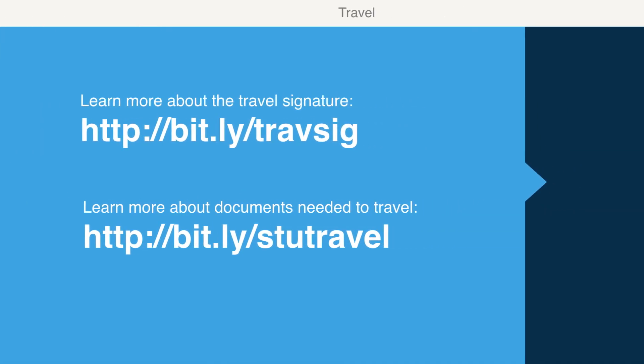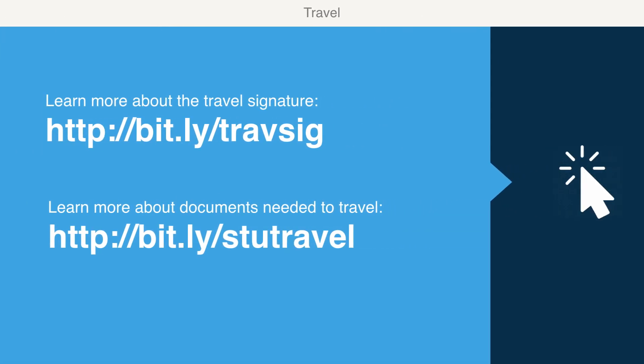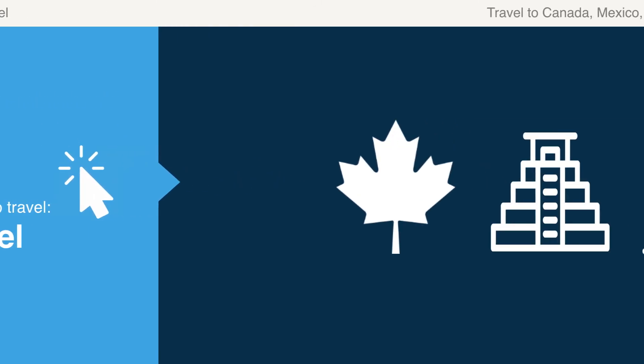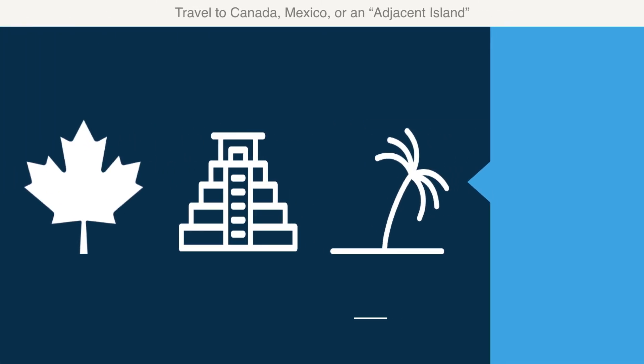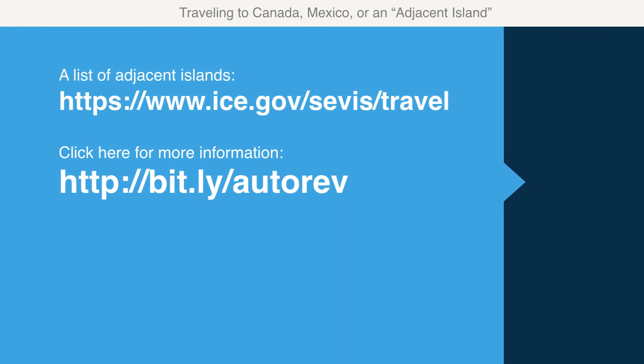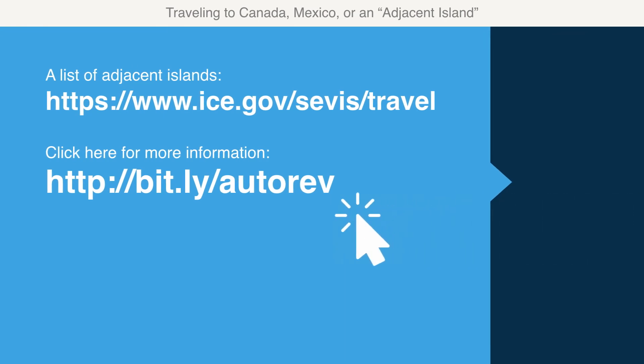Learn more about the travel signature and documents needed to travel on our website. If you're traveling to Canada, Mexico, or an adjacent island, you may be eligible to return to the U.S. with an expired visa. Immigration refers to this process as automatic revalidation. A list of adjacent islands can be found on the ICE, Immigration and Customs Enforcement website.